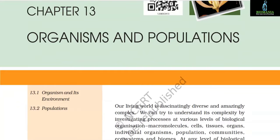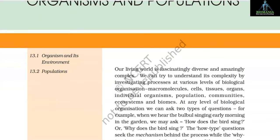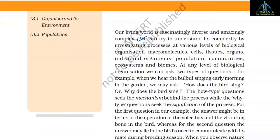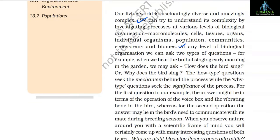Unit 10 ecology, chapter 13: organisms and populations. Our living world is fascinatingly diverse and amazingly complex. We can try to understand its complexity by investigating processes at various levels of biological organization: macromolecules, cells, tissues, organs, individual organisms, populations, communities, ecosystems, and biomes. At any level of biological organization, we can ask two types of questions. For example, when we hear the bulbul singing early morning in the garden, we may ask how does the bird sing, or why does the bird sing.